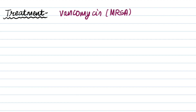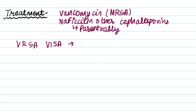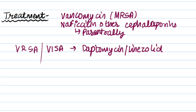For treatment, we can give vancomycin for MRSA (methicillin-resistant Staph aureus), and we can also prescribe nafcillin. Other options include cephalosporins and parenteral antibiotics. In the case of vancomycin-resistant Staph aureus, we can give daptomycin and linezolid. This topic is covered in clinical microbiology and orthopedics. For chronic osteomyelitis, surgical debridement must also be performed. Thank you.